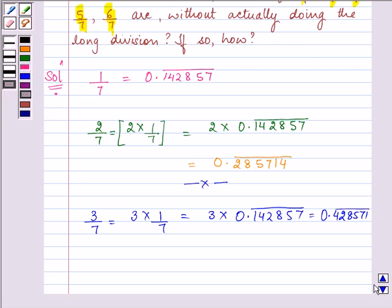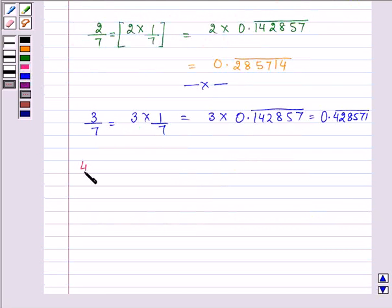Similarly, we will proceed by finding the value of 4/7. 4 multiplied by the value of 1/7 given to us in the question. And the answer comes out to be 0.571428 bar.